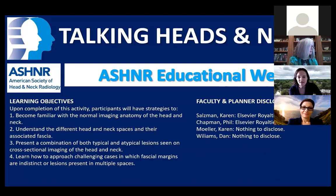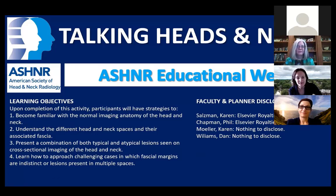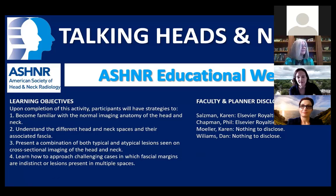Here are the disclosures that our faculty for today have listed. The objectives for today's lecture include going over the normal anatomy of the head and neck, including the fascial planes and spaces. We'll look at typical and atypical lesions on cross-sectional imaging, and then we'll also look at challenging cases in which the fascial margins are indistinct or if the lesions occupy more than one space.